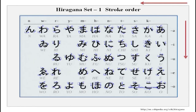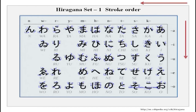Then we have 'wa'. Now, the character 'n' is the only one that does not end in a vowel. You may ask how we use this — for example, how would you say orange in Japanese? It is 'oranji', so the 'n' sound in orange is this alphabet. Also, the Japanese word for orange is 'mikan' — mi, ka, n — and again you see this 'n' sound used.